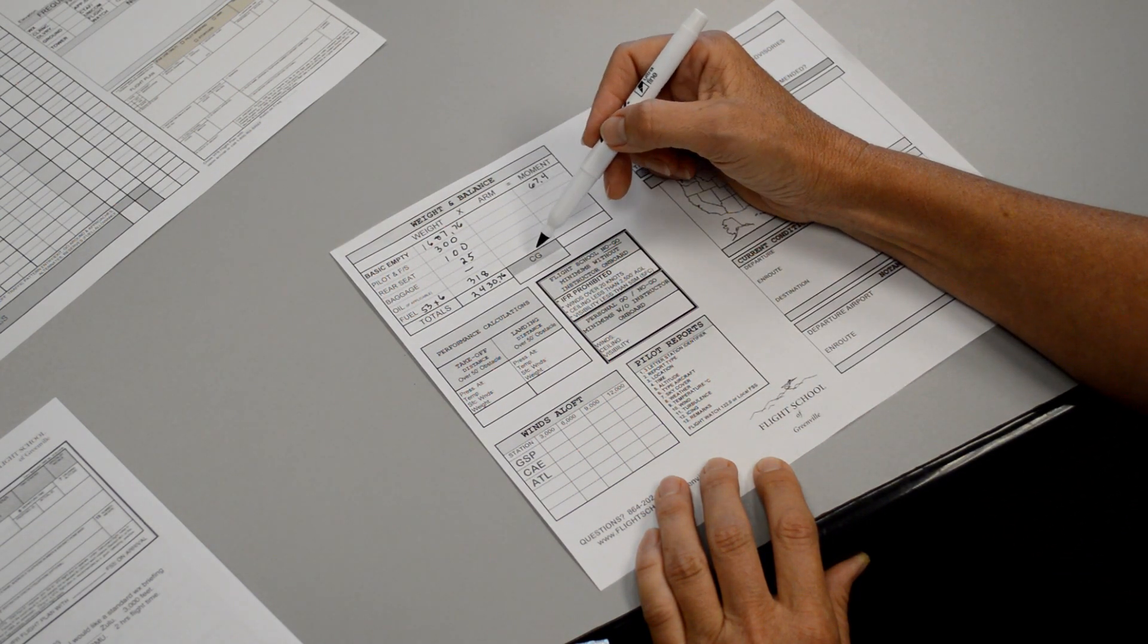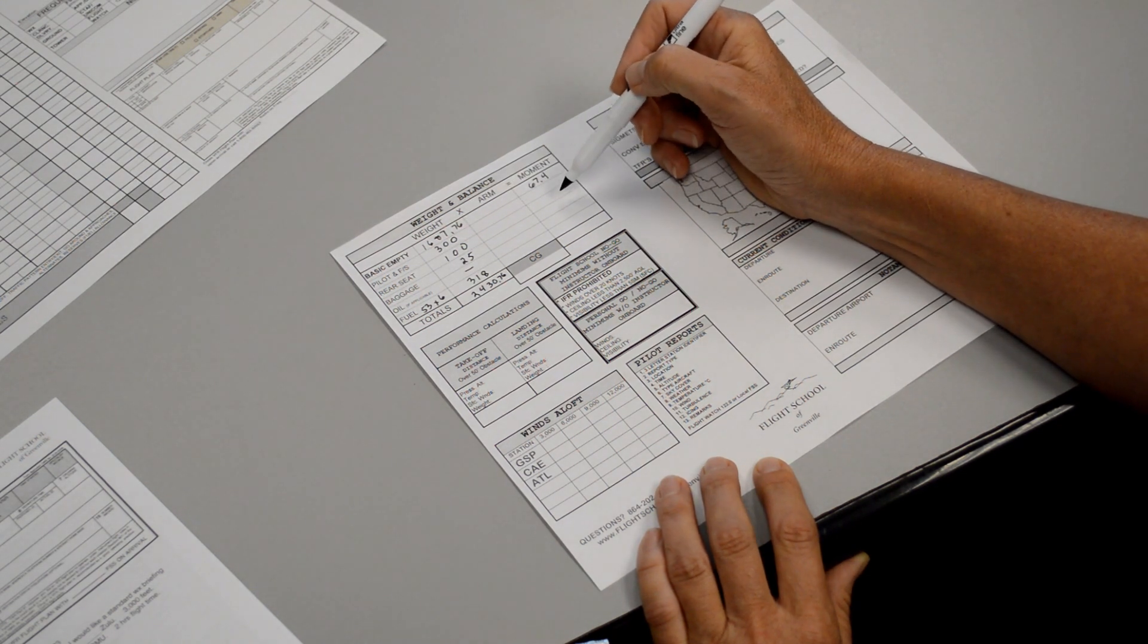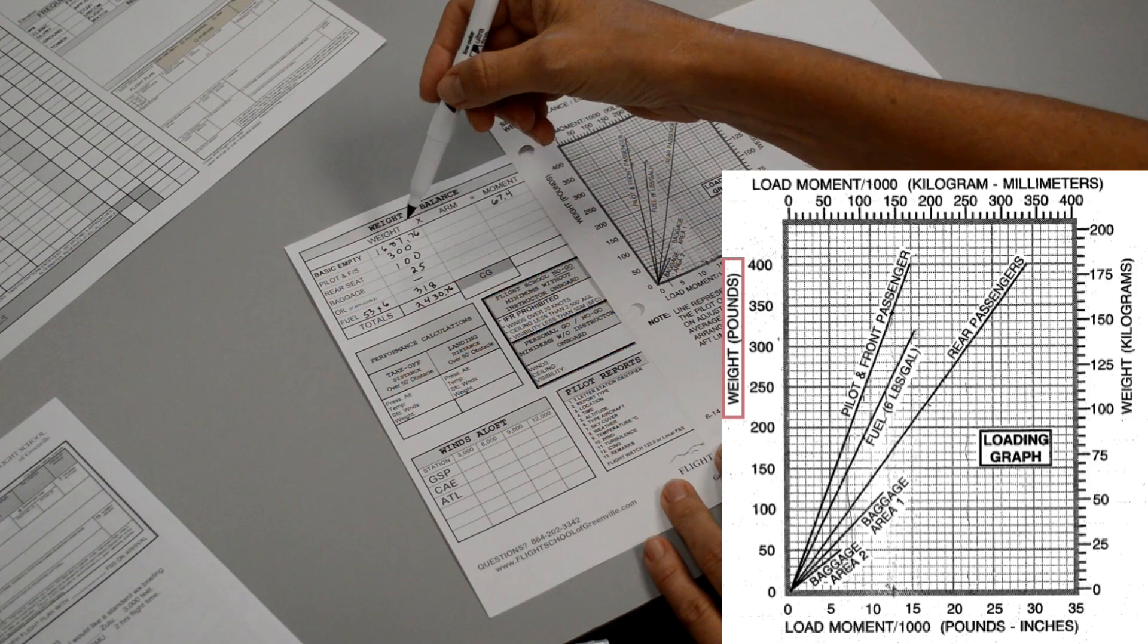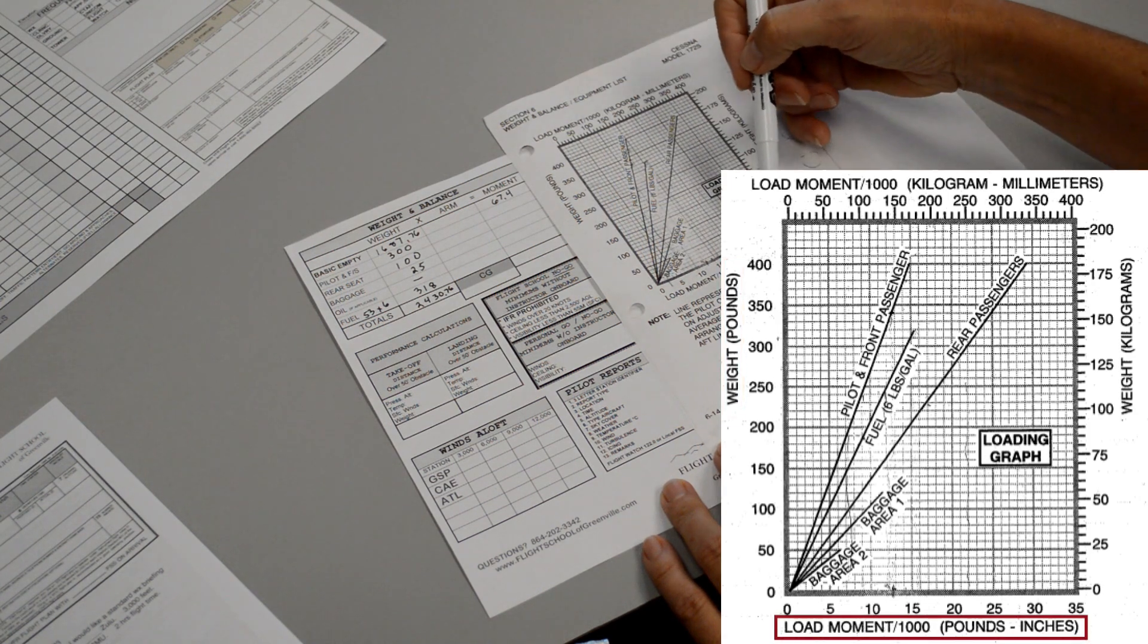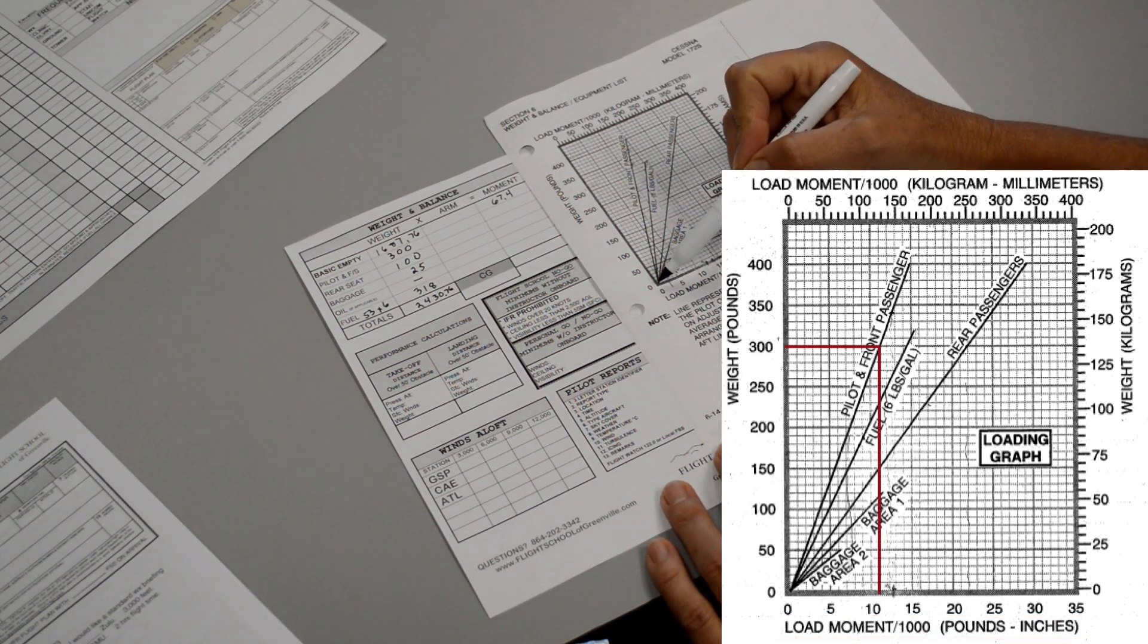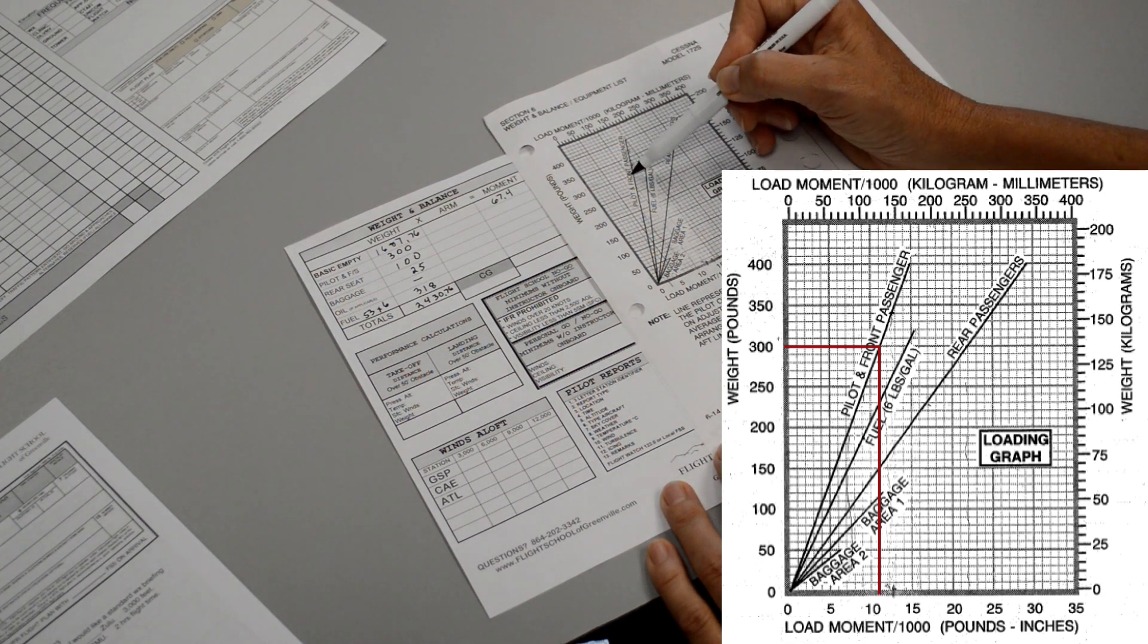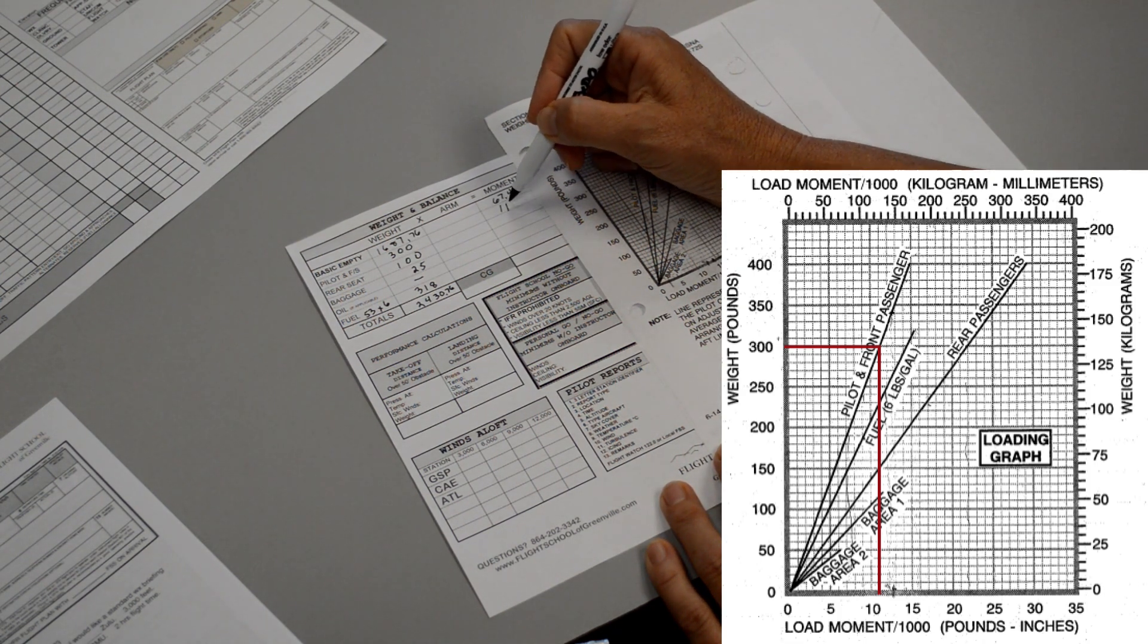Now like I said, sometimes you will have to calculate out if the arm is given and you have to calculate out the weight times the arm equals the moment. But Cessna gives us a nice little graph that we can use so we don't have to do that extra math. So what we're looking at here is 300 pounds in the front seat. So this column up the side is our weight in pounds and the bottom is our moment which has been divided by 1,000 pounds. The pilot in front seat, 300 pounds. So I go up the side here, find 300, and then go across until I see the line that says pilot in front seat. And it looks like it is about 11. So our moment for the pilot in front seat will be 11.0.